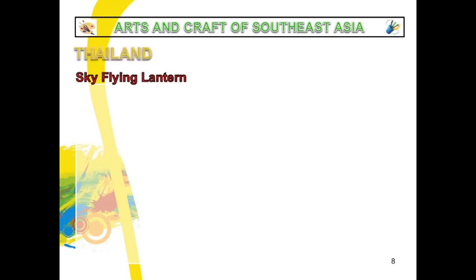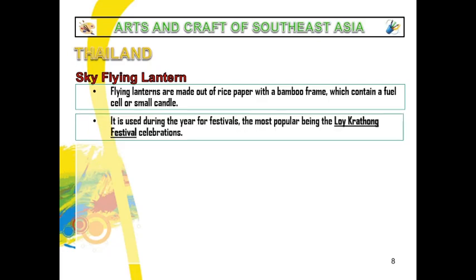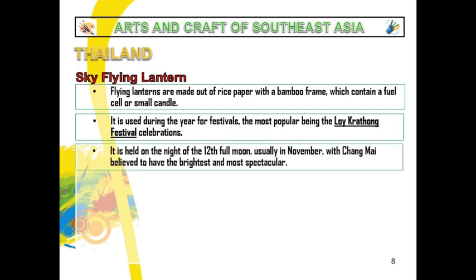In Thailand, sky flying lanterns are famous. Flying lanterns are made up of rice paper with a bamboo frame, which contains a fuel cell or small candle in the middle to help them propel up into the air. They are used during the year for festivals. The most popular is the Loy Kratong Festival, held on the night of the 12th moon, usually in November, with Chiang Mai believed to have the brightest and most spectacular.